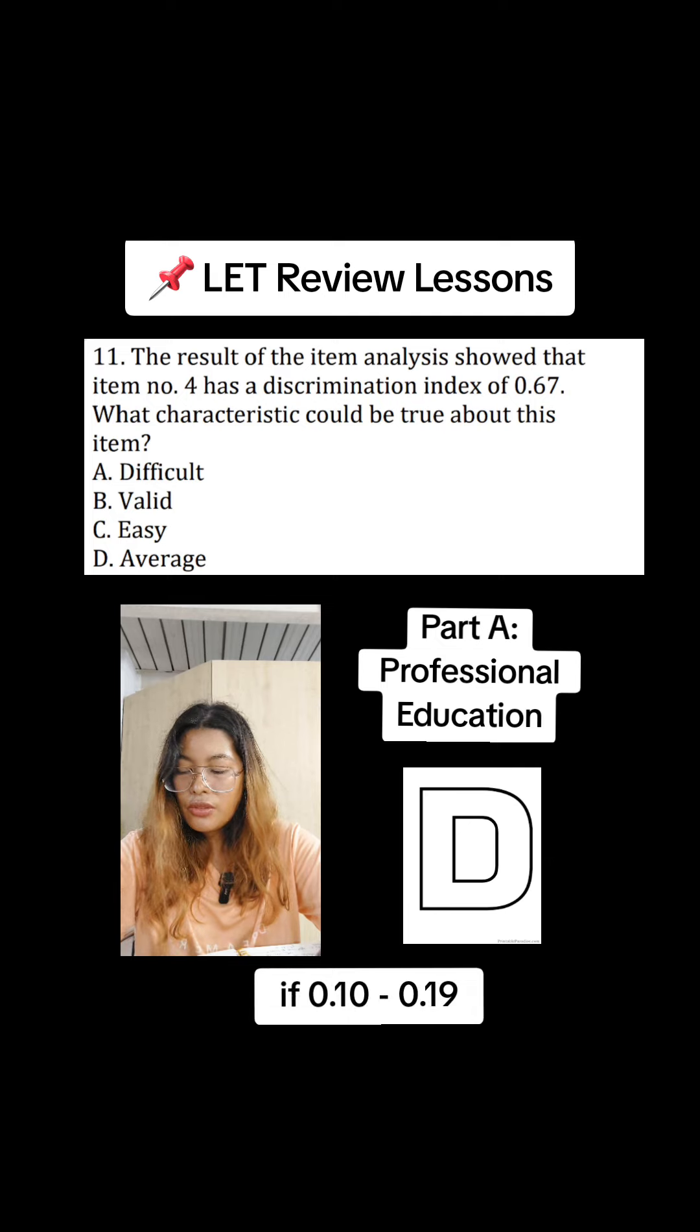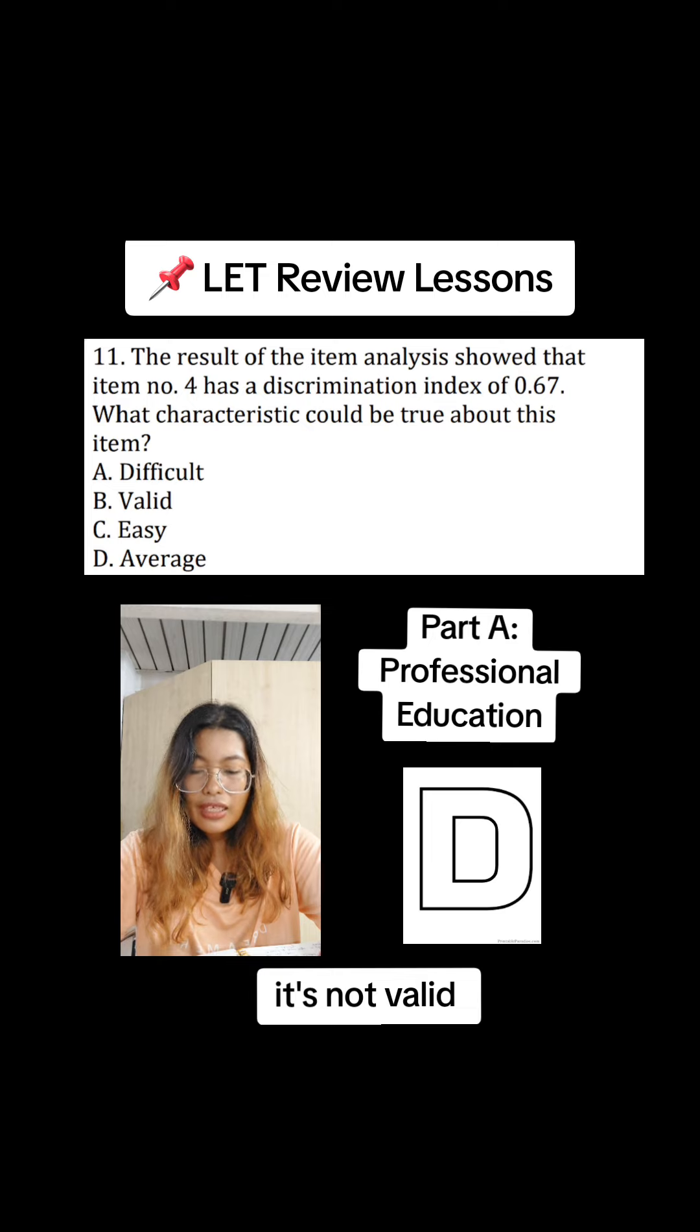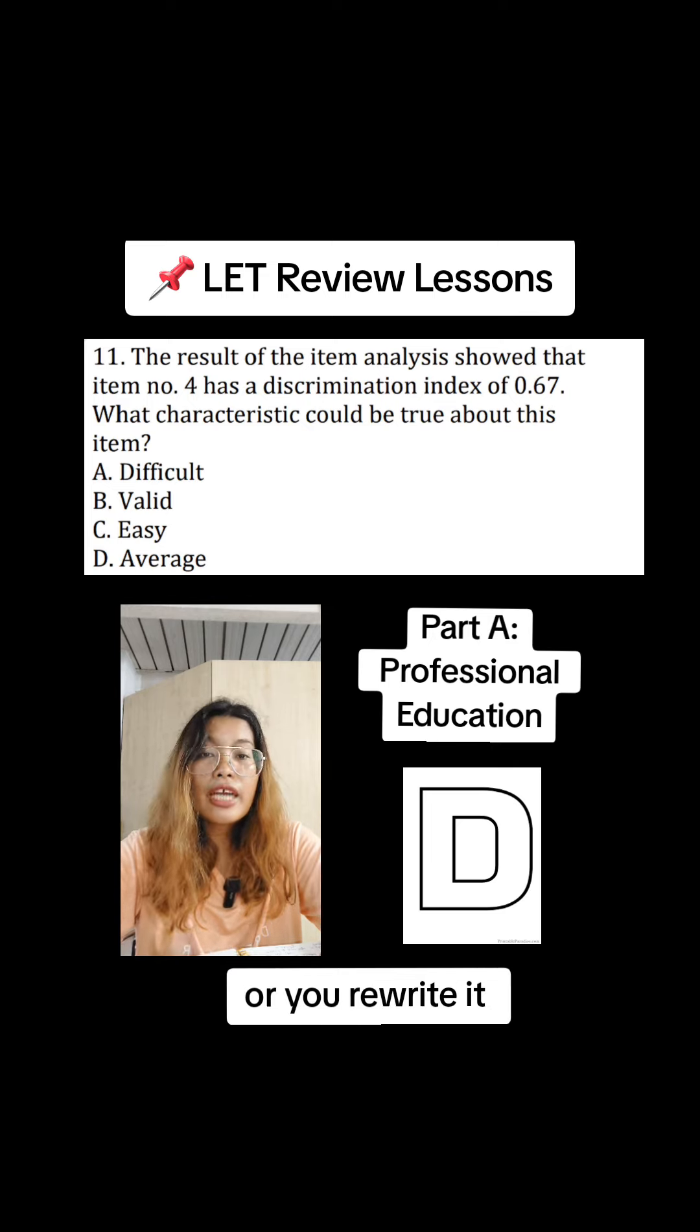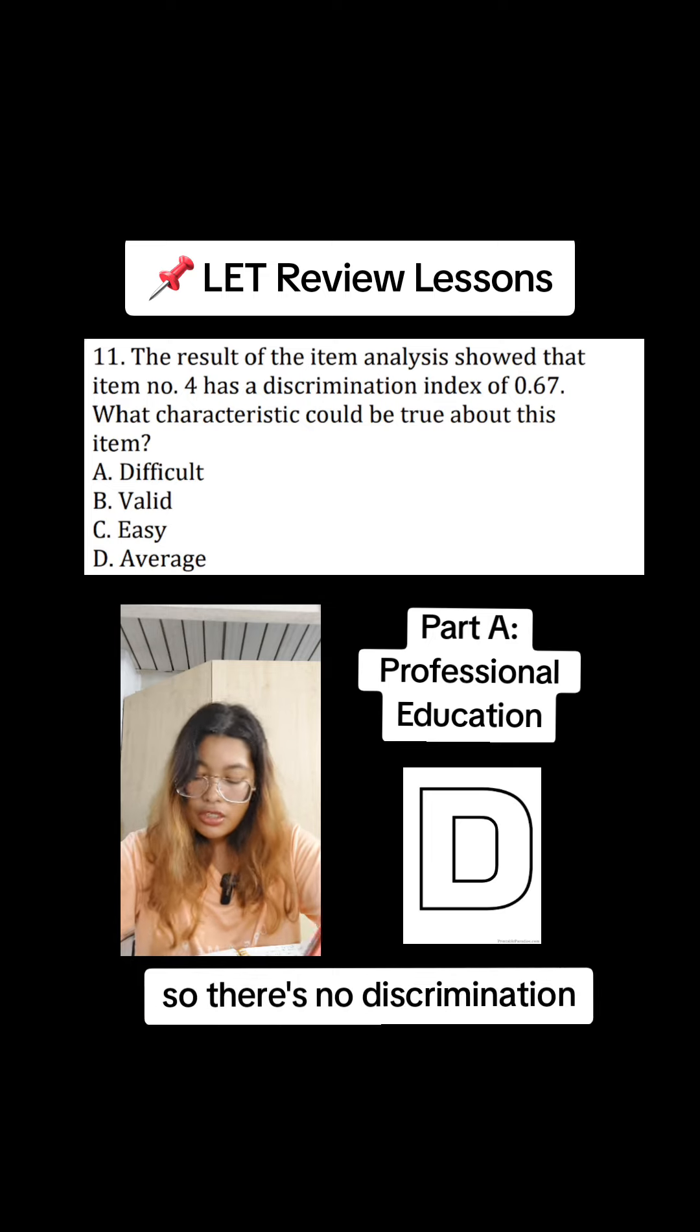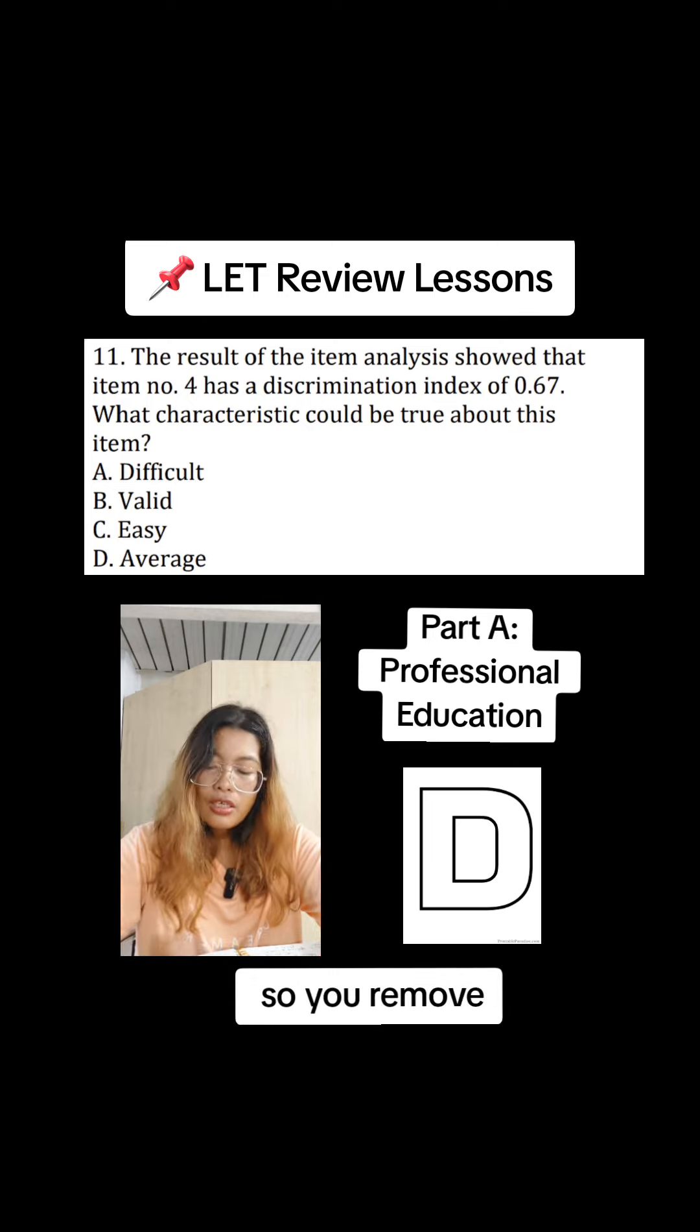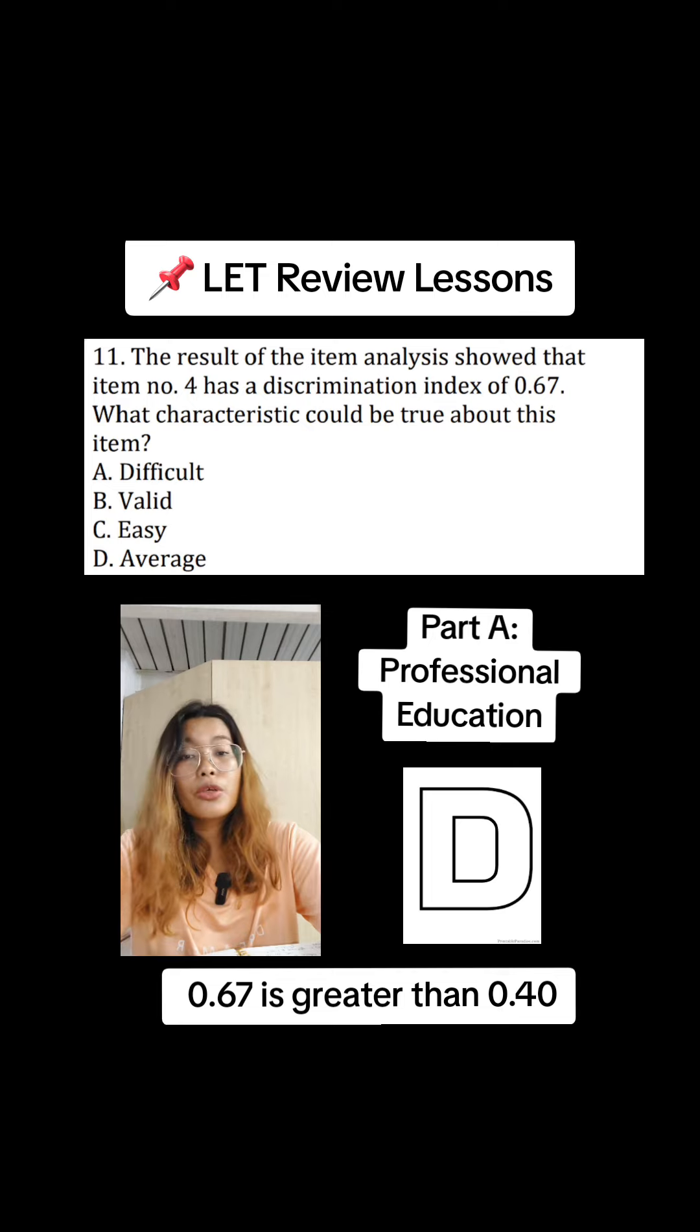If it's 0.10 or 0.19, low discrimination, that means it's not valid. So you remove or you rewrite it. 0.0 negative, so there's no discrimination, so you remove.